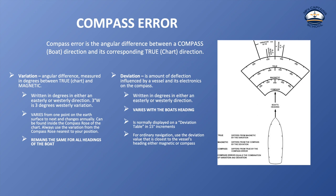Deviation is the second component of compass error. It is the amount of deflection influenced by a vessel and its electronics on the compass, written in degrees in either an easterly or westerly direction. Deviation varies with the boat's heading — whereas variation varies with your location on the earth. It is normally displayed in a deviation table in 15-degree increments, and for ordinary navigation, use the deviation value closest to the vessel's heading in either magnetic or compass.